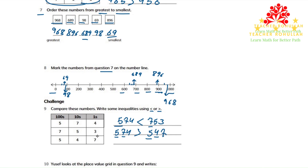To compare the second number with the third number, we write 753 and 547. The bigger number is 753 because it has a seven in the hundreds place. So we use this sign and say that 753 is greater than 547.